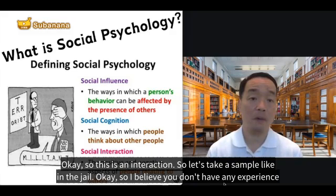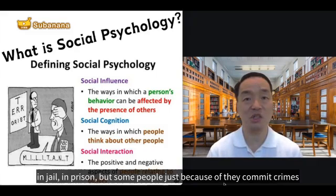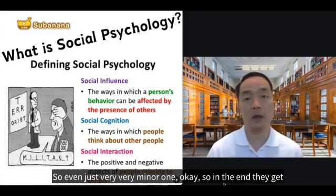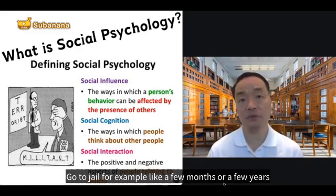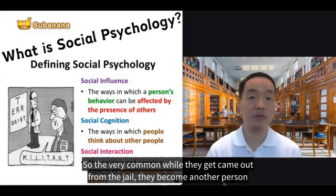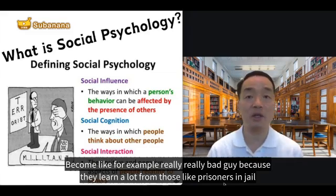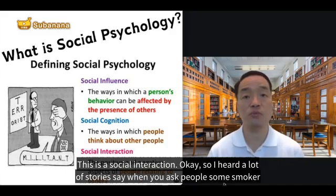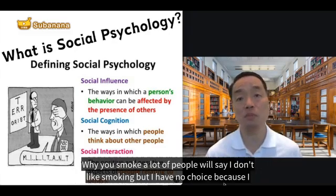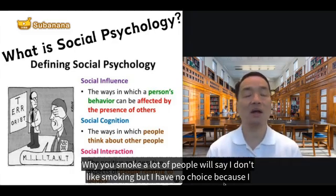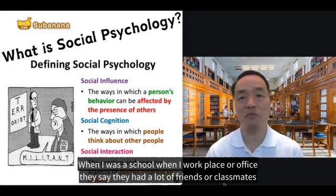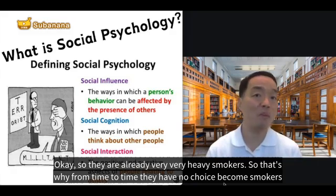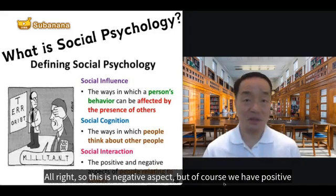For example, in jail: some people commit even very minor crimes and go to jail for a few months or years. Commonly, when they come out they become a very different — often worse — person, because they learned a lot from the prisoners inside. This is social interaction. Similarly, I've heard many smokers say: 'I don't like smoking, but when I was at school or at work, my friends and classmates were already heavy smokers, so from time to time I had no choice but to become a smoker.' That is a negative aspect of social interaction.